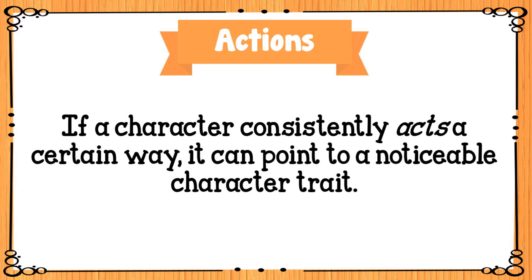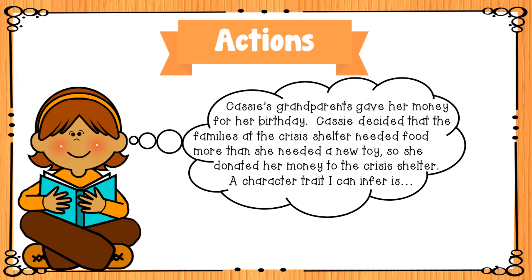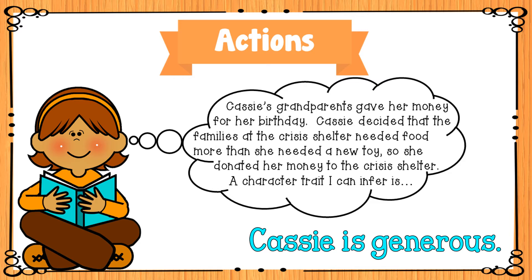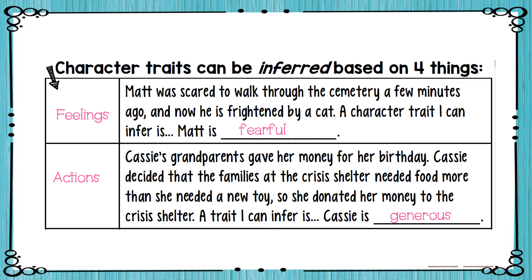The second one is actions. If a character consistently acts a certain way, it can point to a noticeable character trait. Cassie's grandparents gave her money for her birthday. Cassie decided that the families at the crisis shelter needed food more than she needed a new toy, so she donated her money to the crisis shelter. A character trait I can infer is that Cassie is generous. In our second box, write the word actions, because we inferred from her actions that Cassie is generous.